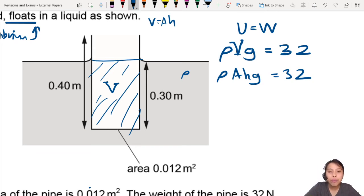So when you calculate your values, you're trying to find the density, so we don't know what that is. So it's just ρ. Everything else we move to the other side, so 32 divided by Ahg. Area is 0.012 meter square.